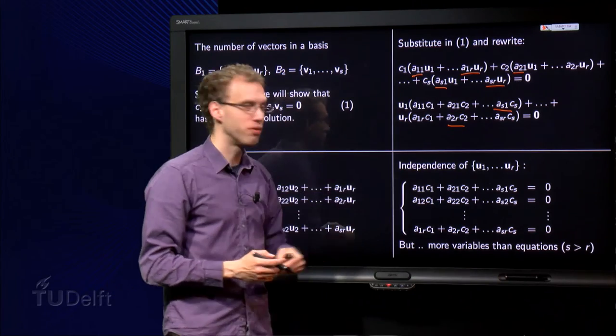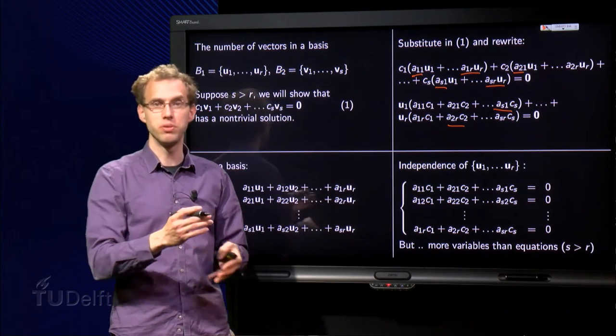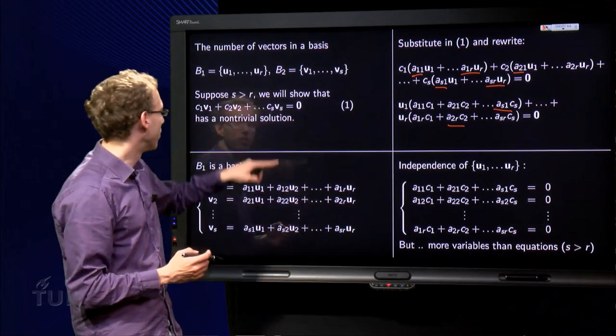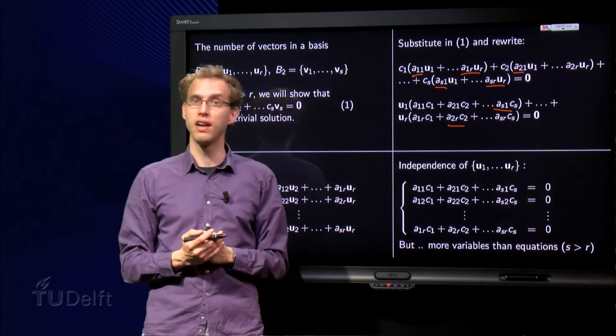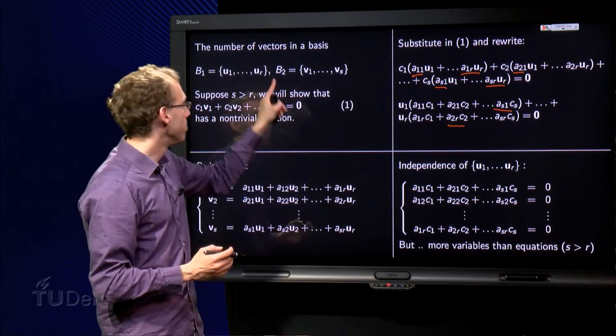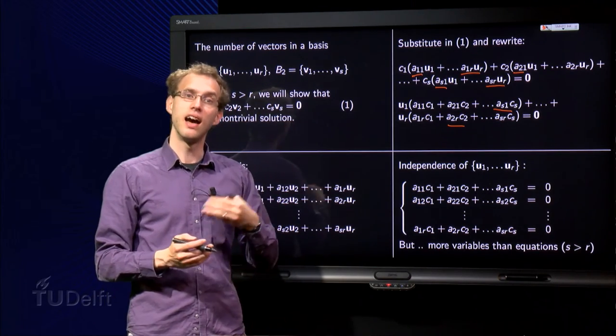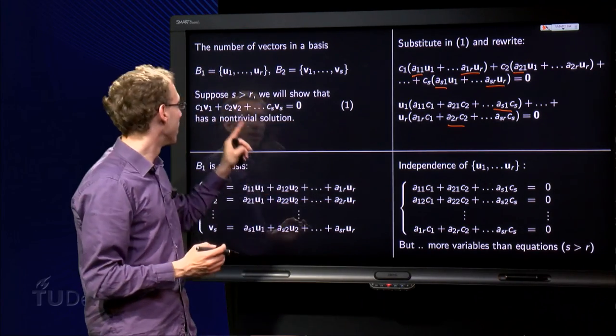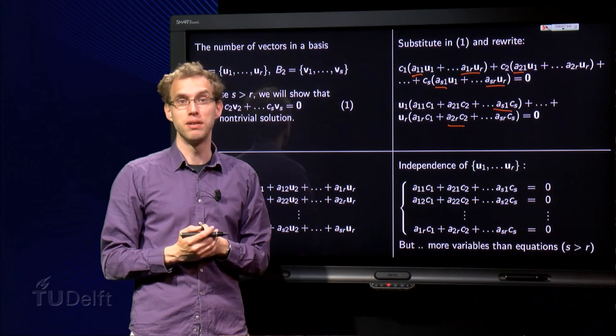But since we have a non-trivial solution for the c₁ up to cₛ, that means that we have a non-trivial solution over here, and that means that the set over here is dependent. So B₂ cannot be a basis, and that concludes the proof why s cannot be bigger than r.